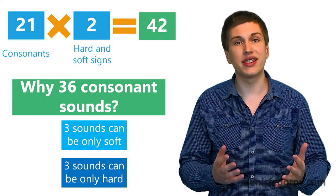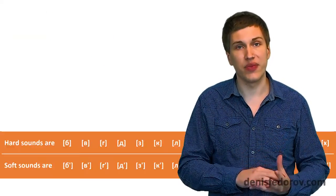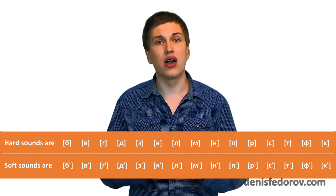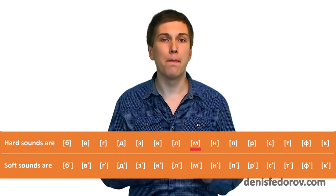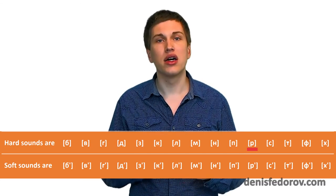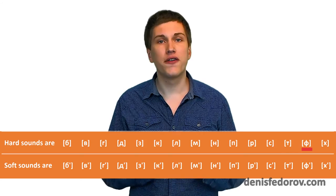15 letters have pair sounds. It means they can be both hard and soft. So we get 30 sounds that are called pair sounds. Hard sounds are Б, В, Г, Д, З, К, Л, М, Н, П, Р, С, Т, Ф, Х.